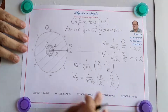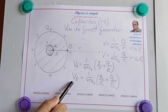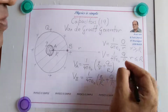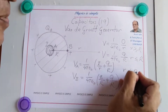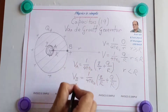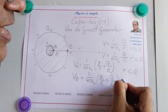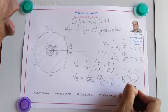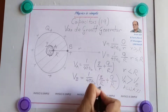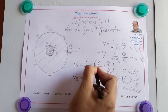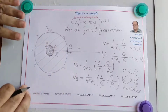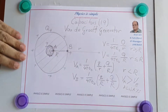We now realize that the only difference between these two potentials is that VA has small r in the denominator while VB has capital R. Since small r is less than capital R, the term q/r is greater than q/R, which means VA is always more than VB.